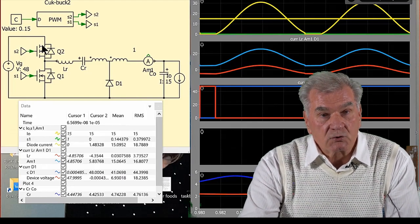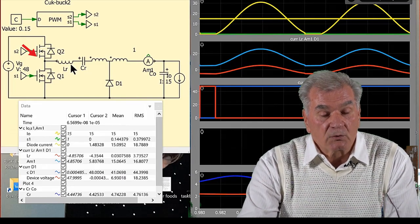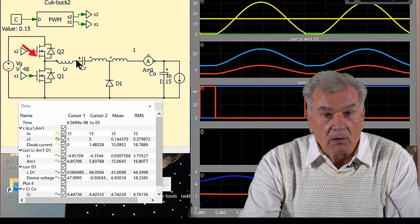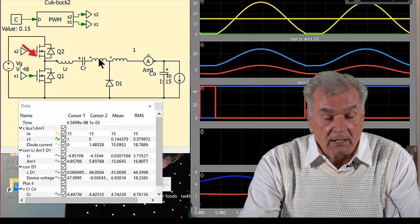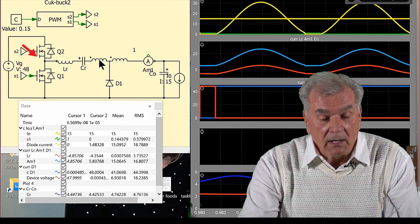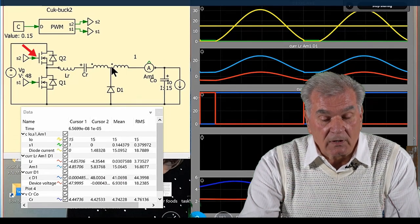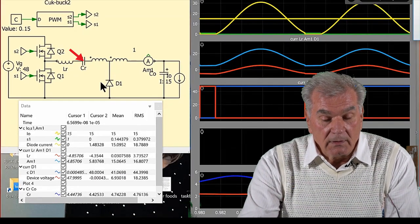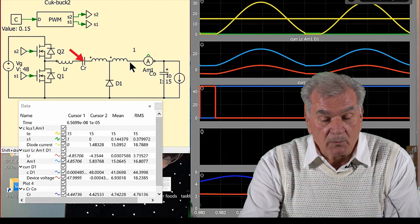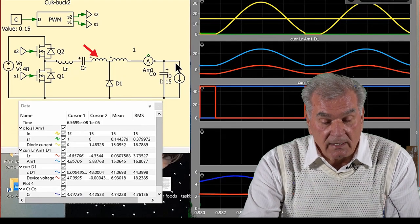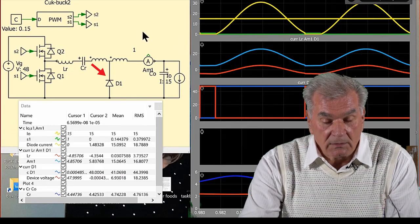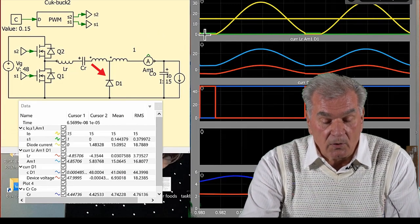The circuit of the Cuk-buck2 converter has two switches on input—transistors which are operated out of phase in a high side drive configuration. On the input side you have a resonant capacitor and a hybrid transformer with its primary and secondary. You have a diode and on the output, the secondary delivers current to the load.